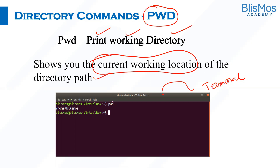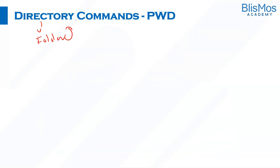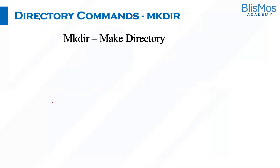For example, here I have executed a PWD. It is showing me home and blismas. What it means is I am working currently in the home/blismas path. My current working directory is blismas. Next command is mkdir. What is mkdir? Make directory. If you really observe, most of the commands in Linux are intuitive. For example, make directory has been abbreviated as mkdir.